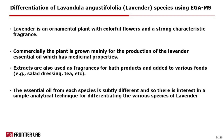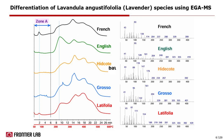The essential oil from each species is subtly different, and so there is an interest in a simple analytical technique for differentiating the various species of lavender. In this slide, we show the EGA curve of different lavender samples obtained from different sources. The left side thermogram is the EGA curve and the right graph is the average mass spectrum of different samples in the low temperature range.